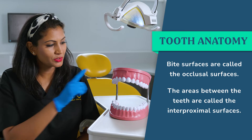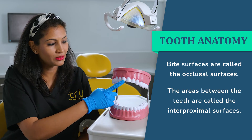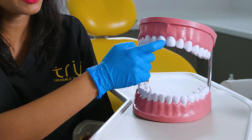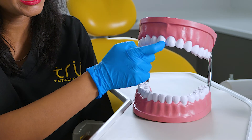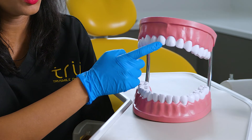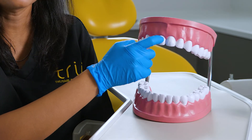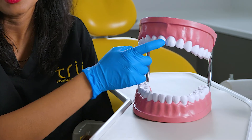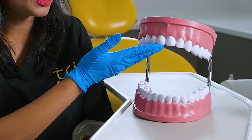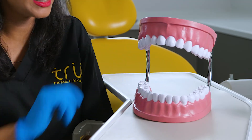So for example, for this tooth over here, if the dentist wants to explain what's happening in this area, they may say upper right one, mesial surface has a cavity or a filling, etc.